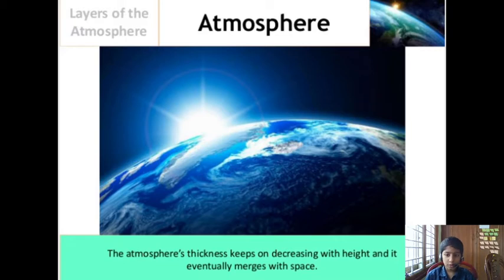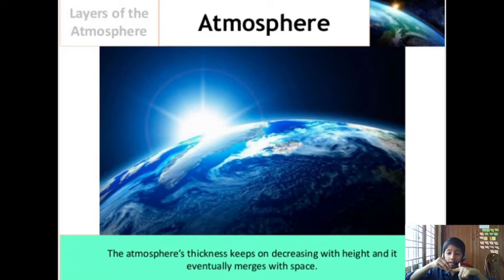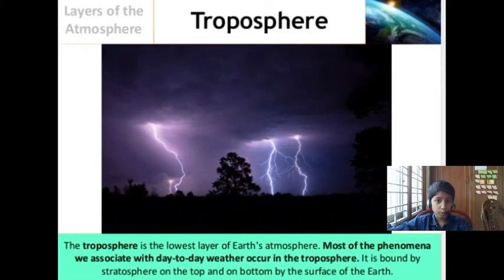If we go to space without a space suit, our blood will start to burn. 37 degrees Celsius is the normal human temperature, and in that temperature in space, the blood and everything will start to boil and come out like a bubble. Talking about the first layer of atmosphere, that is troposphere.